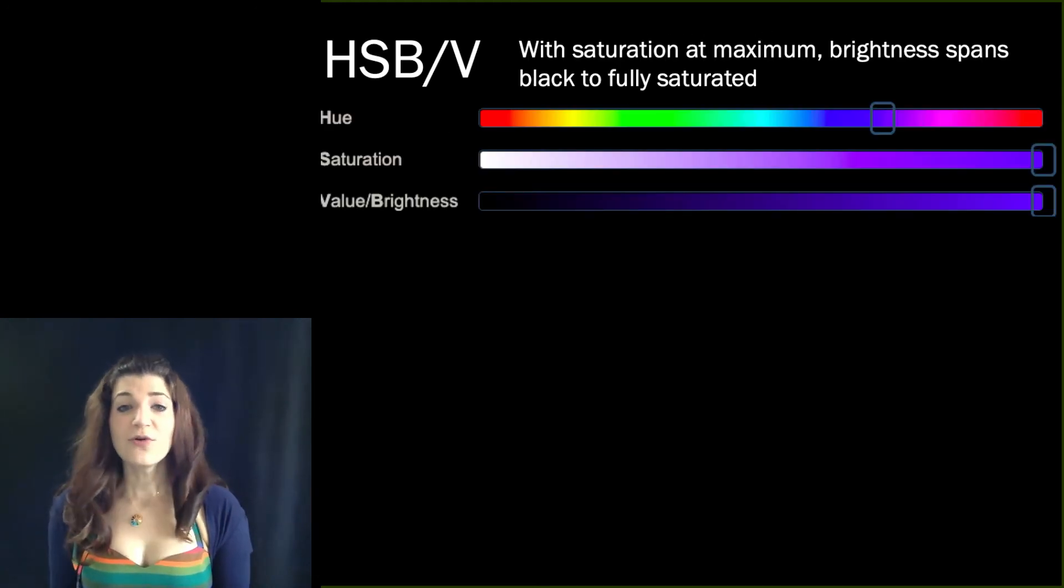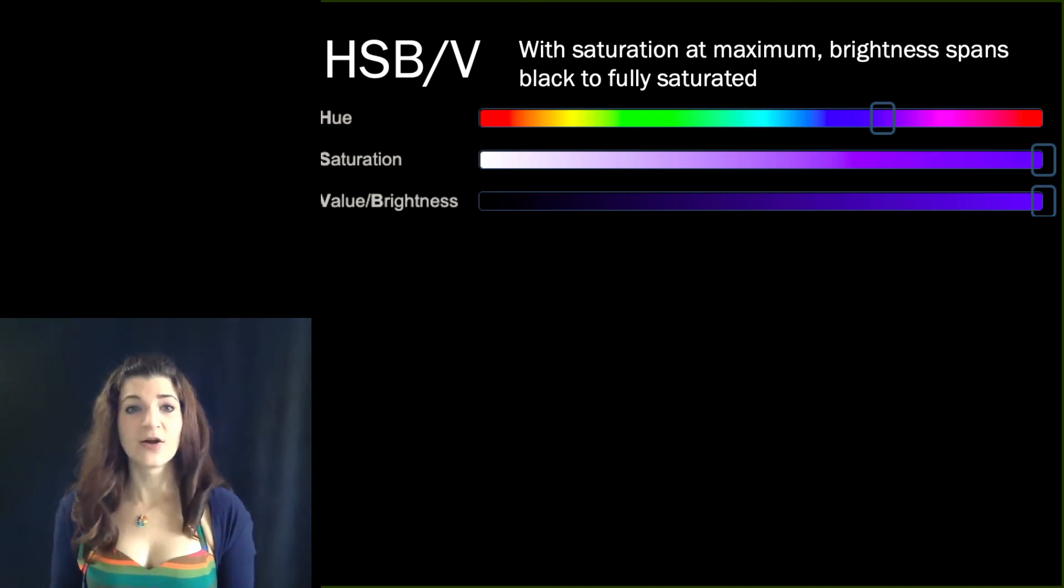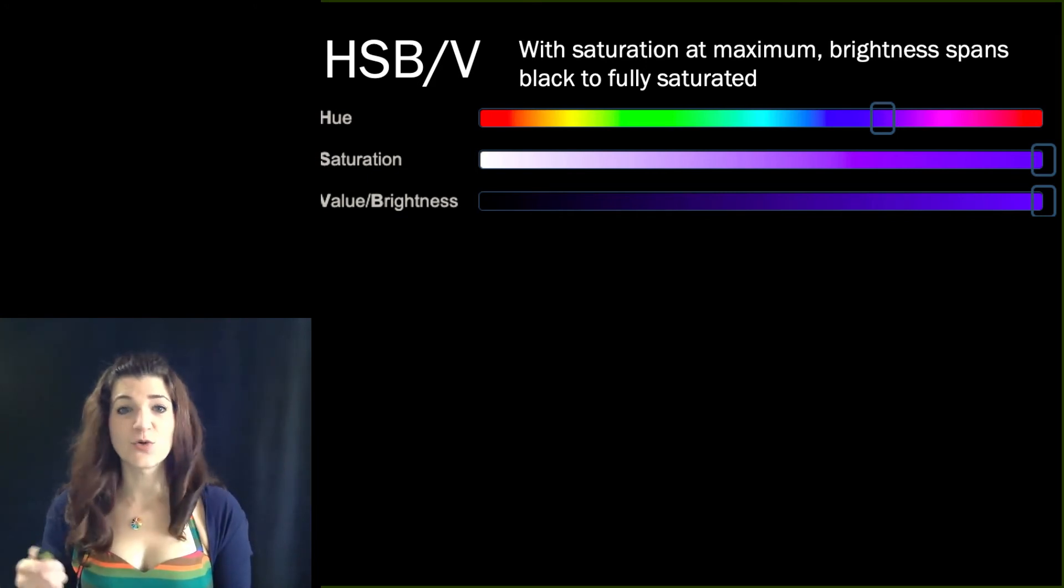Okay, so to review. Hue varies according to what we typically think of as color. Saturation varies from white, wholly unsaturated, to fully saturated. And brightness or value ranges from black to fully bright.